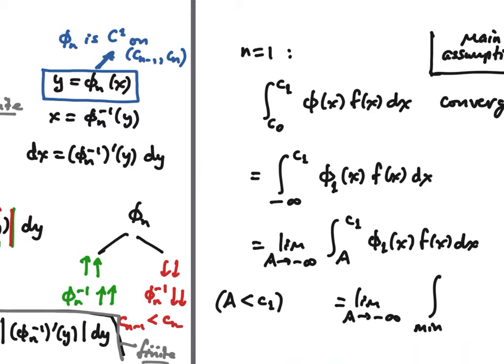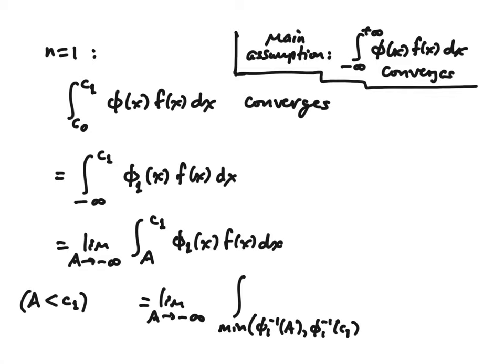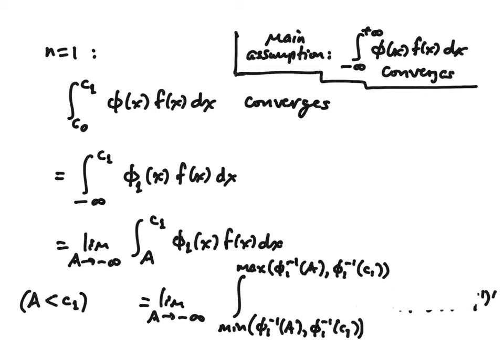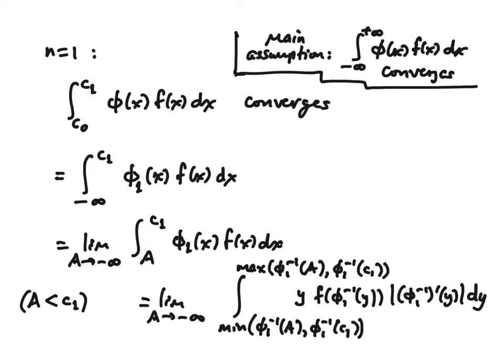In the green case — φ_1 is increasing, and so is φ_1 inverse — since a is less than c_1, the minimum is going to be φ_1 of a and the maximum is φ_1 of c_1. The absolute value sign is unnecessary because the derivative is positive anyway. So the u-sub is completely legitimate and yields this expression. The question is: what happens as a goes to minus infinity?